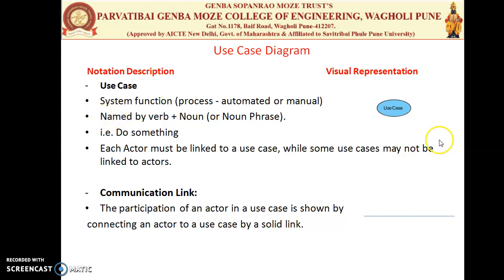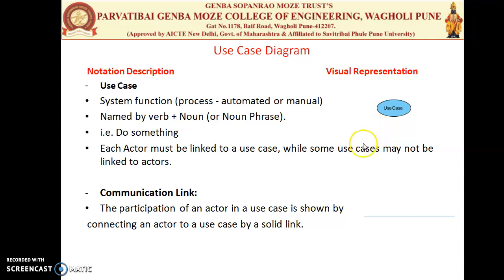The second notation is the Use Case. A Use Case is nothing but the system function. It is represented by an Oval shape, and inside the oval we name the system function — whatever it is, such as Checking User Name, Reservation, or Airline Booking System. The Use Case can contain any system functionality, depending on the system we are going to model.